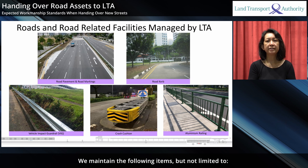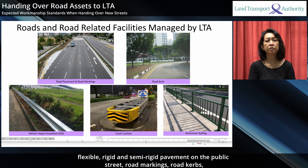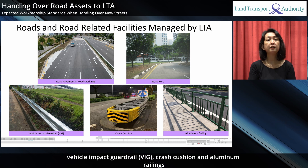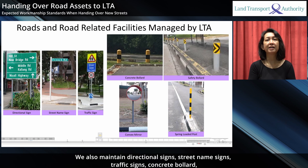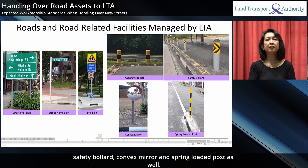We maintain the following items, but not limited to: flexible, rigid and semi-rigid pavement on the public street, road markings, road curbs, vehicle impact guardrail (VIG), crash cushion and aluminium railing. We also maintain directional signs, street name signs, traffic signs, concrete bollard, safety bollard, convex mirror and spring-loaded poles as well.